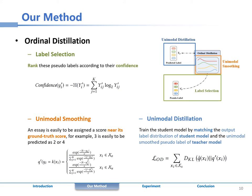Among them, label selection selects the high-confidence pseudo-labels for later distillation. Unimodal smoothing enforces the label distribution of pseudo-labels to be a unimodal probability distribution.